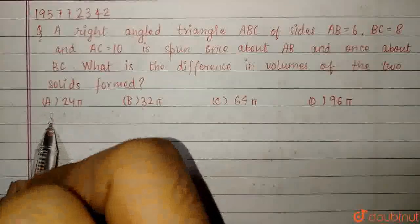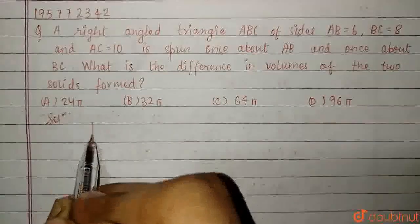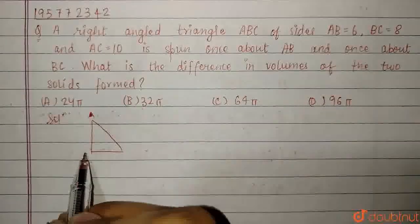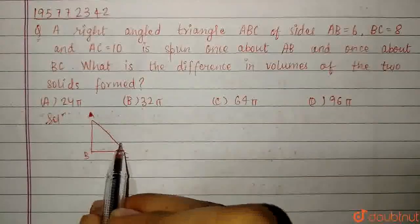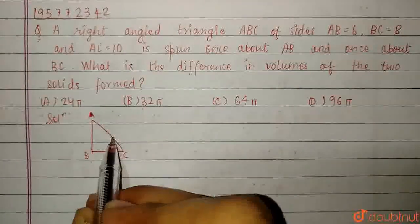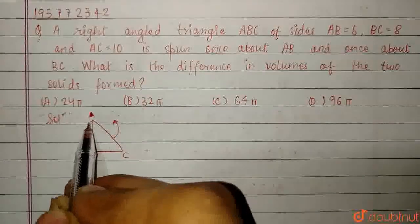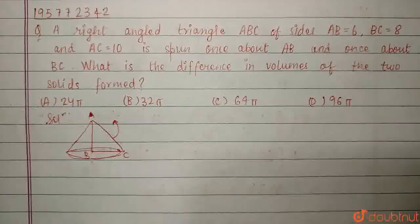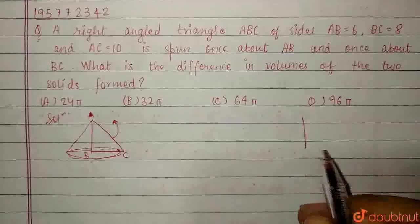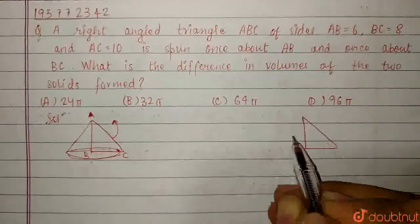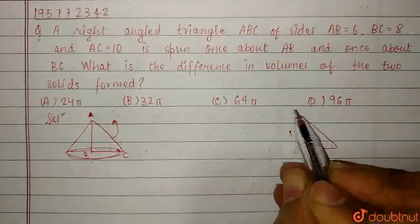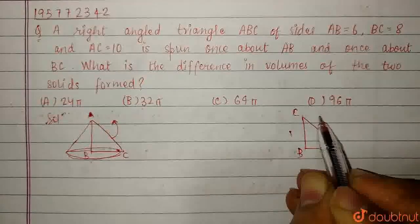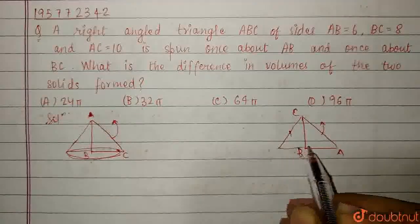So, let's say that this is the triangle A, B and C. It is first rotated around AB, forming a cone, and it is also once rotated by BC, forming another cone. This is C, this is B, this is A.